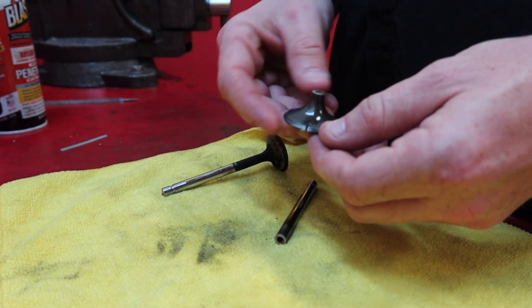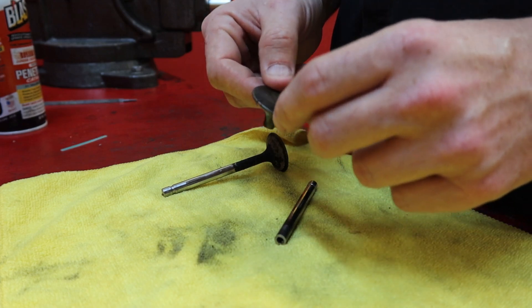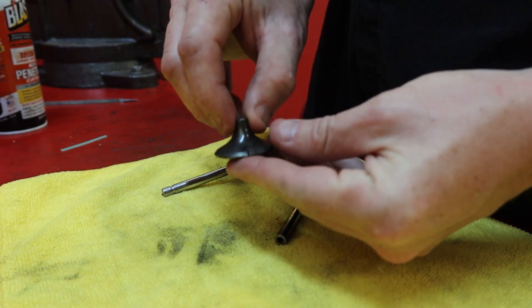All right, so I attempted to cut this valve head in half but this is extremely hard material and our bandsaw blade's a little worn, so I didn't feel like changing bandsaw blades. But the base of this valve, as you can tell, is hollow and there's more sodium inside the valve.